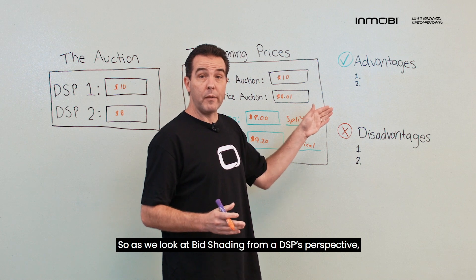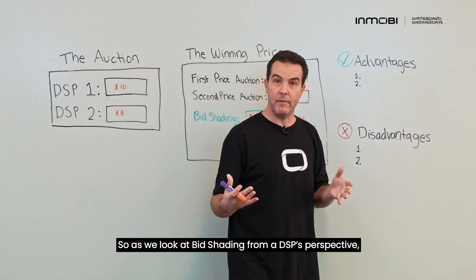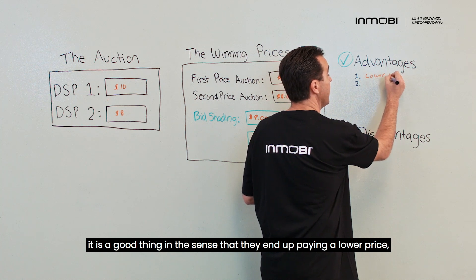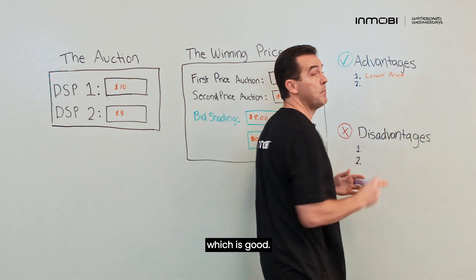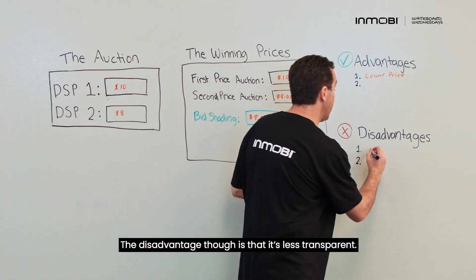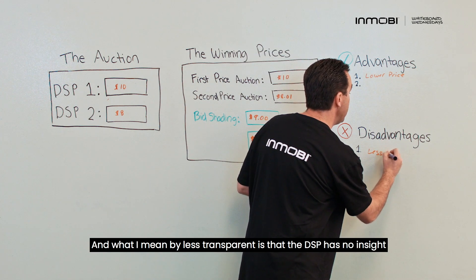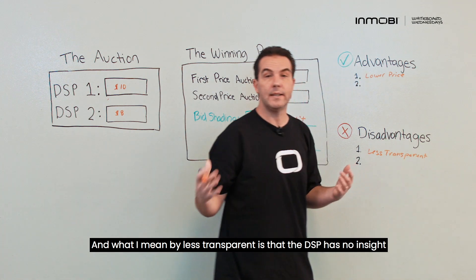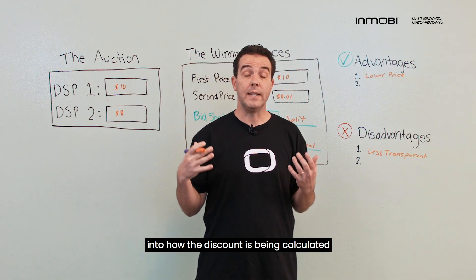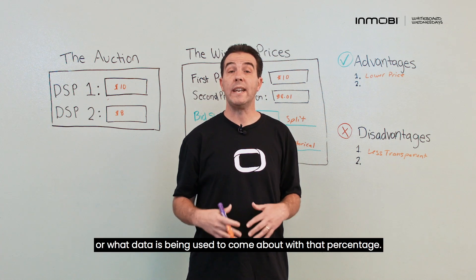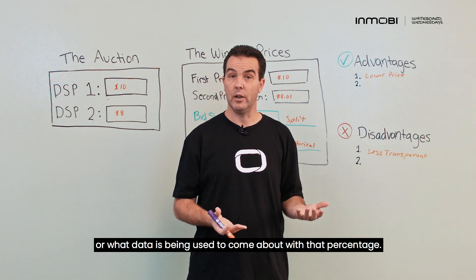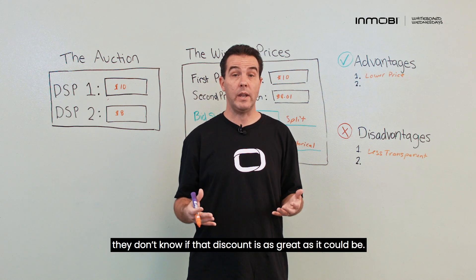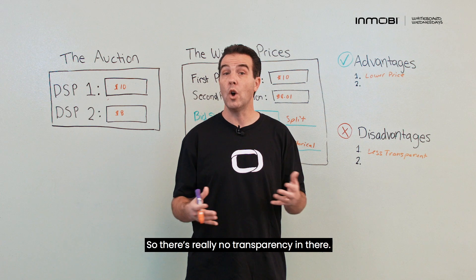From a DSP's perspective, bid shading is a good thing in the sense that they end up paying a lower price. The disadvantage, though, is that it's less transparent. The DSP has no insight into how the discount is being calculated or what data is being used to arrive at that percentage. So even though the DSP is getting a discount, they don't know if that discount is as great as it could be — there's really no transparency.